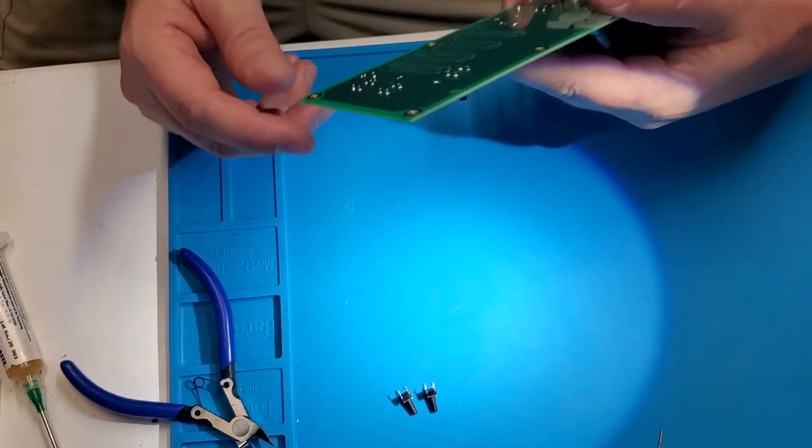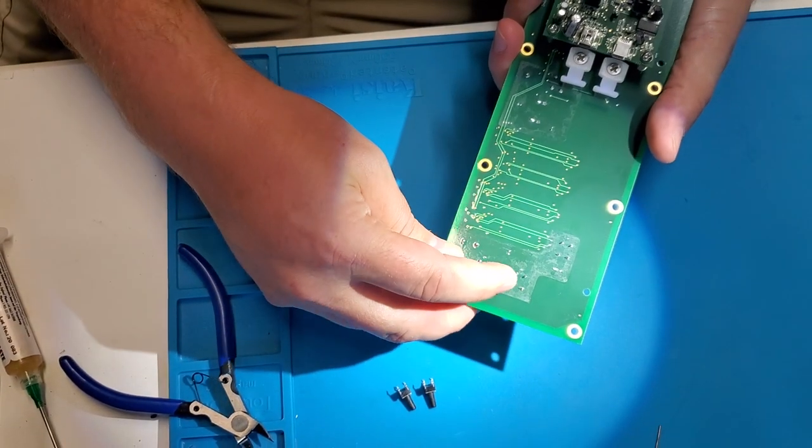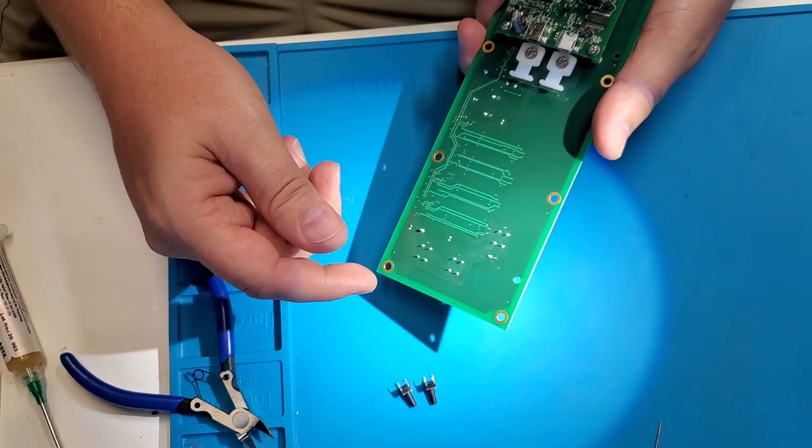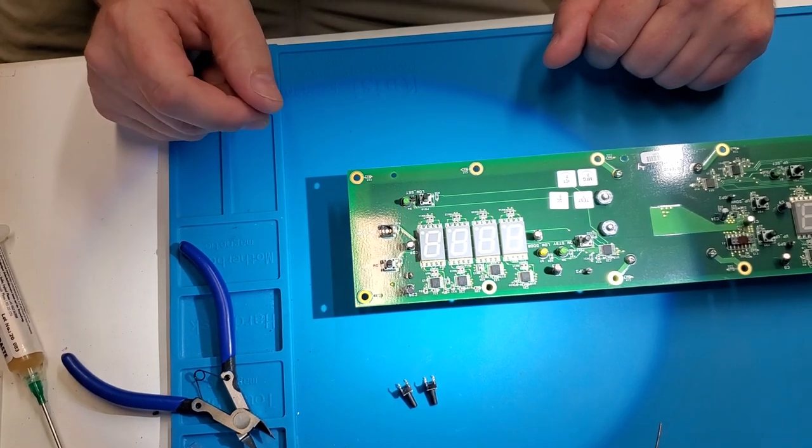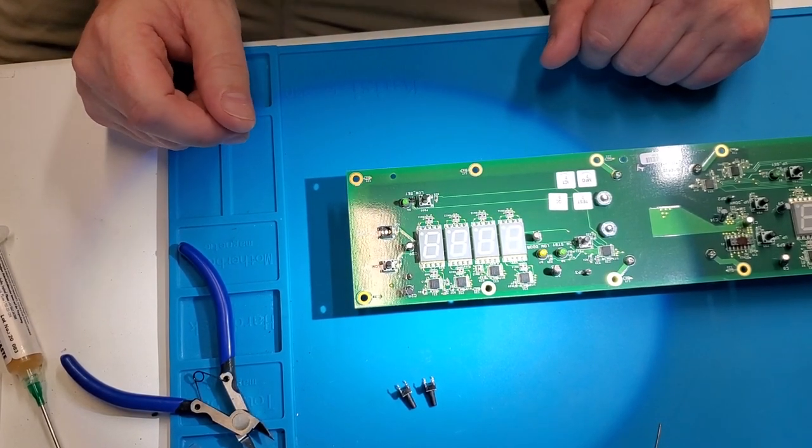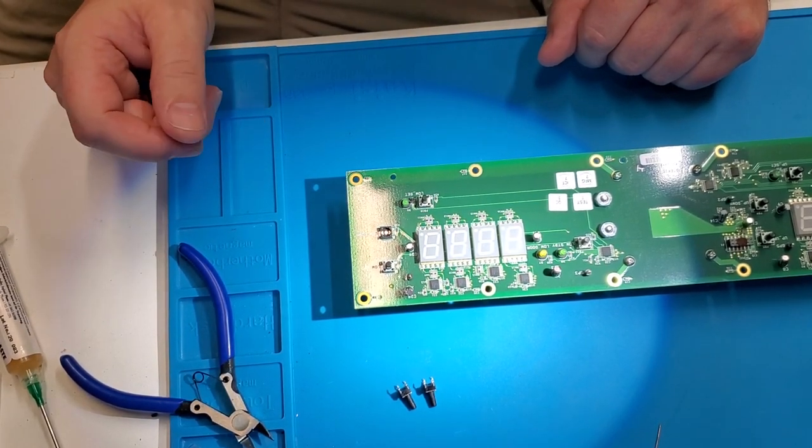So some of the things that you'll notice is that these ones are through hole. So we'll have to actually desolder these. And in doing so, I'm going to have to add some solder and we'll go from there. So let's go ahead and turn the soldering iron on and get started.